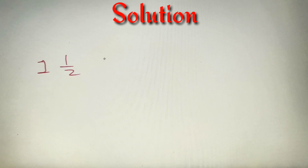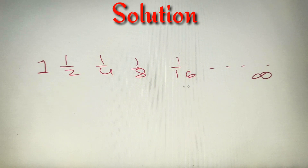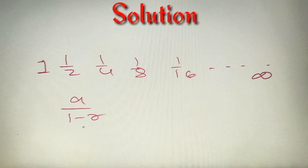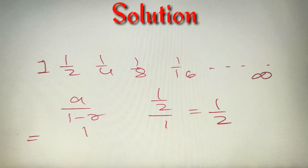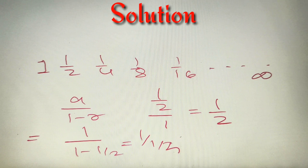For the first question, the GP given is 1, 1/2, 1/4, 1/8, 1/16, and so on up to infinity. We need to find the sum. First, we check the common ratio: (1/2) ÷ 1 = 1/2. Since r = 1/2 lies between −1 and 1, we can apply the formula. With a = 1 and r = 1/2, the sum equals 1 / (1 − 1/2) = 1 / (1/2) = 2.